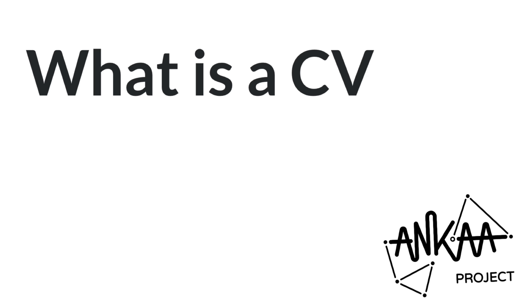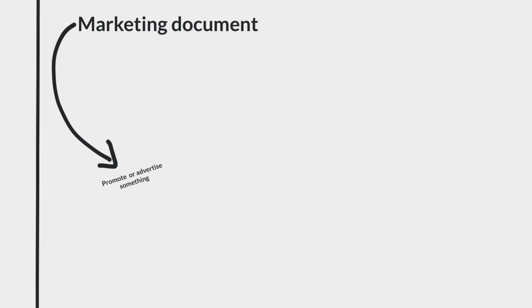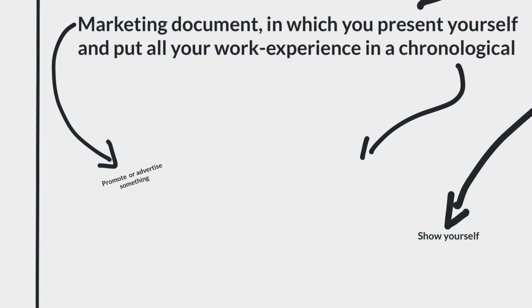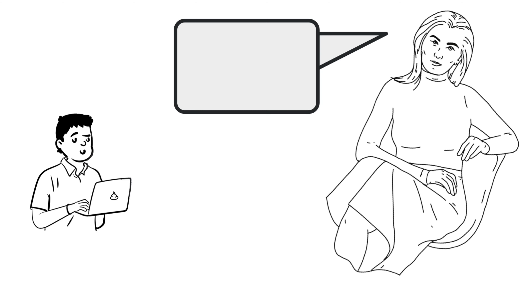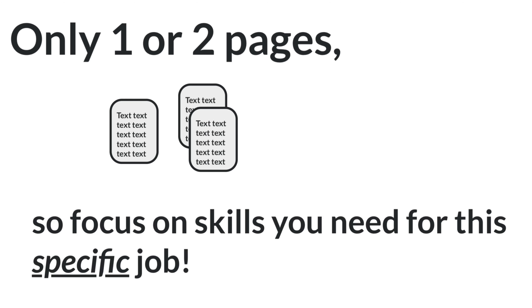First of all, what is a CV exactly? A curriculum vitae is a marketing document in which you present yourself and put all your work experience in a chronological order, so that the company can decide if you would do your job well. You have only one or two pages to show that you are the right person for the job, so you'll focus on the skills that you need for this specific job.